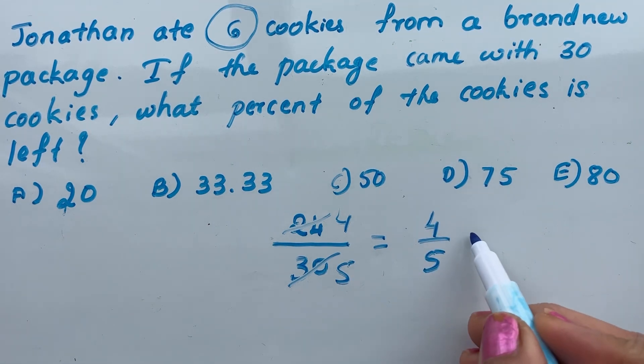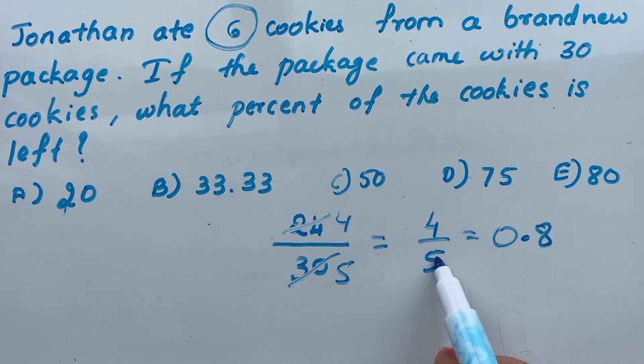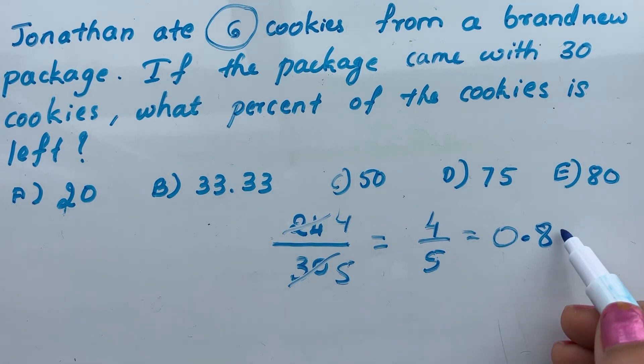4/5 is equal to 0.8. Because 5 times 8 is 40, so that means 4/5 equals 0.80, as you can see.